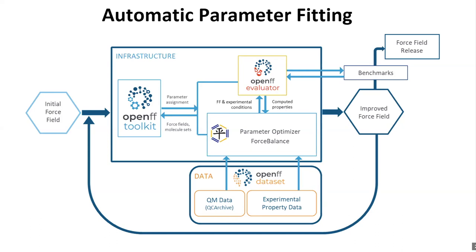One computes these quantities using the force field, does a comparison, and then does an adjustment of the parameters that should yield an improved force field. It goes back, runs the calculations again, compares with the reference data again, and iterates to convergence, at which point one has a set of presumably better force field parameters. One can then benchmark the force field, and if it works well, have a new force field release.